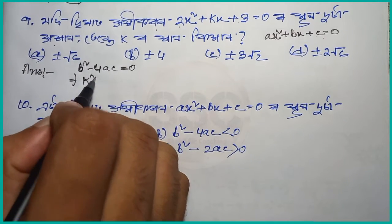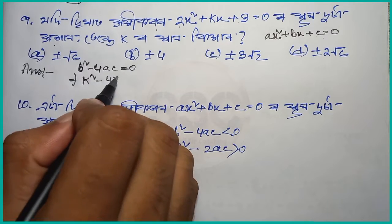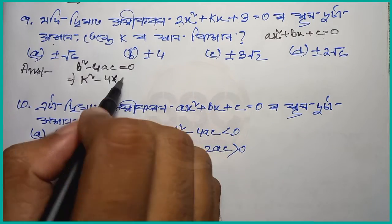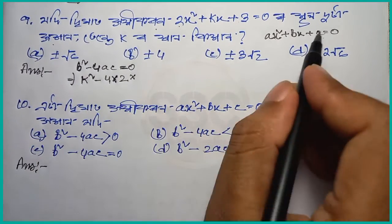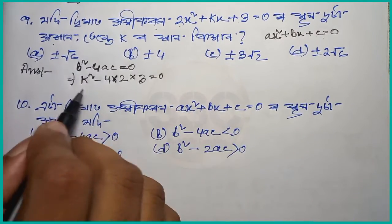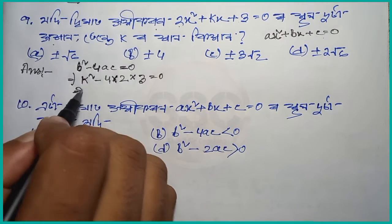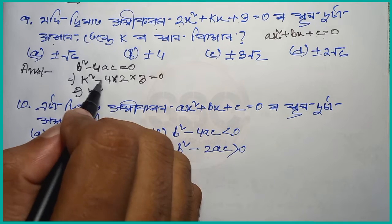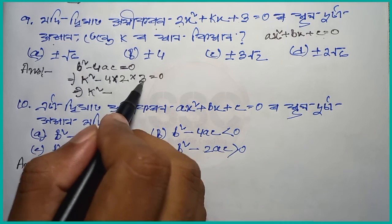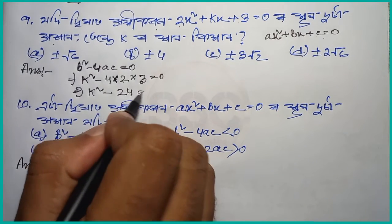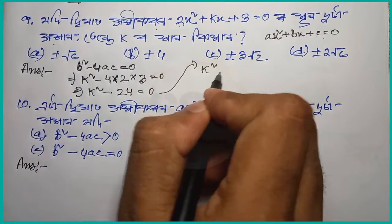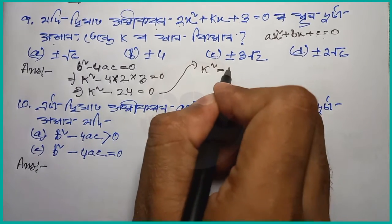So b squared — I have k squared. Now b squared minus 4ac: 4 into a into c. Here a is the coefficient from x squared, which gives us 2, and c is 3. So k squared minus 4 times 2 times 3 equal to 0. We calculate the value of a. So k squared remains, and minus 8 gives minus 24. So k squared minus 24 equal to 0, which means k squared is equal to plus 24.